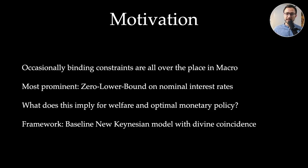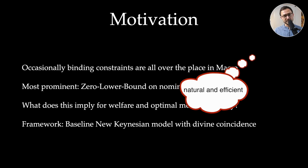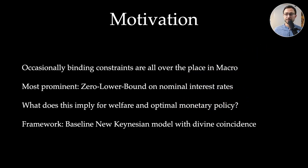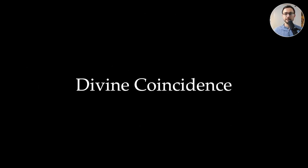In this video I want to focus on the implications of that bound on welfare and on optimal monetary policy. Our laboratory is going to be the baseline log-linearized new Keynesian model, where we have shown that an interest rate rule that mimics the natural interest rate and follows the Taylor principle is able to mimic the natural and efficient allocation uniquely — that is, it stabilizes prices and yields an output gap of zero. This is what has become known as the divine coincidence. Now what happens if this model is hit by shocks that drive the economy to the zero lower bound?